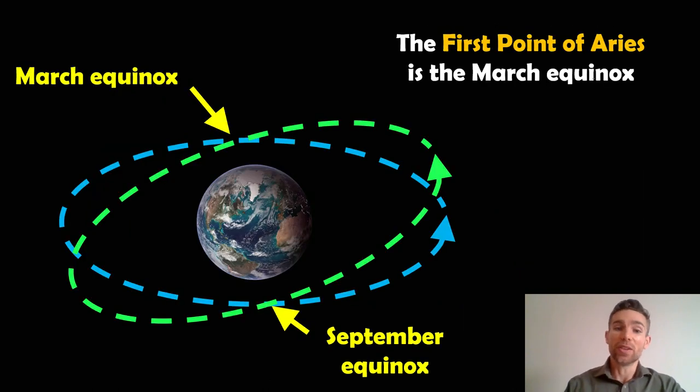Now the first point of Aries is actually the March equinox. So it's called the first point of Aries, but it's actually the March equinox, and it's that one where it intersects there.